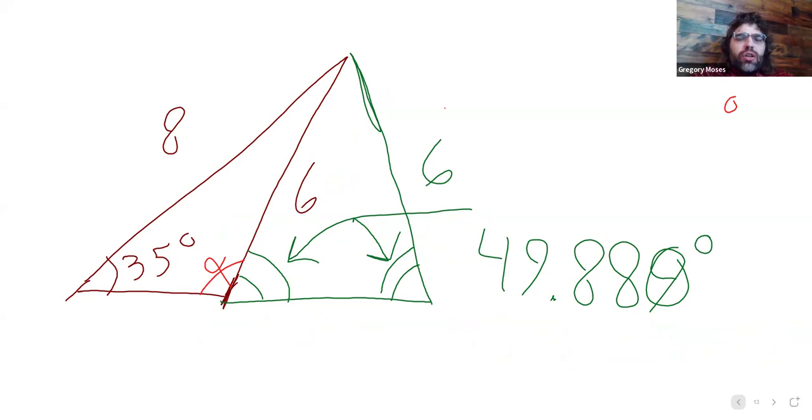This angle is clearly bigger than 90 degrees. And then when we recognize that this case is occurring, we subtract 180 minus the angle we found to find the real angle.